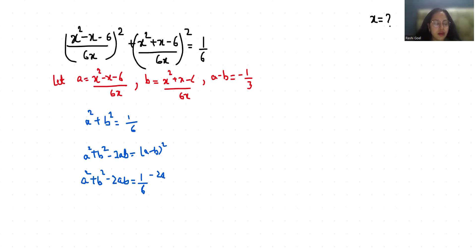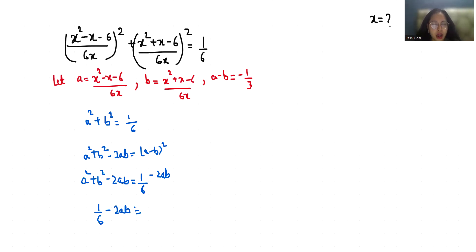So (a - b)² = 1/6 - 2ab. Since a - b = -1/3, in place of a² + b² I write 1/6 - 2ab, and in place of a - b I substitute -1/3.